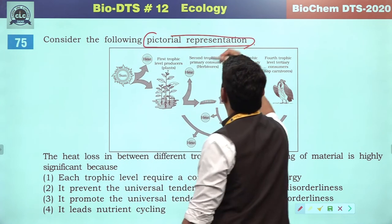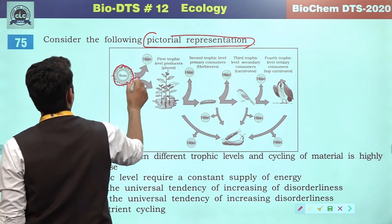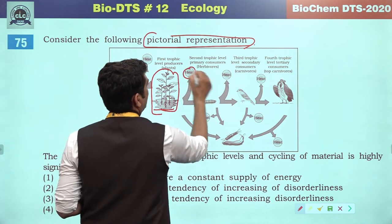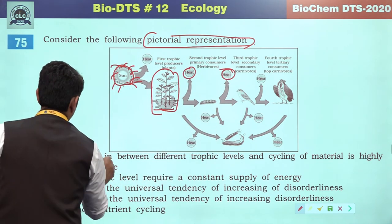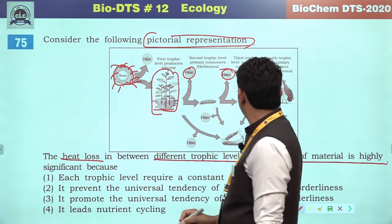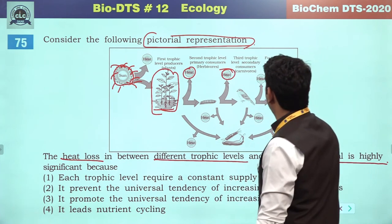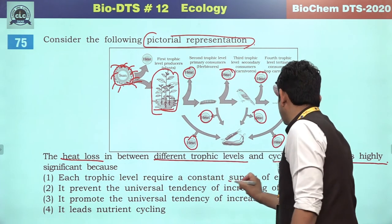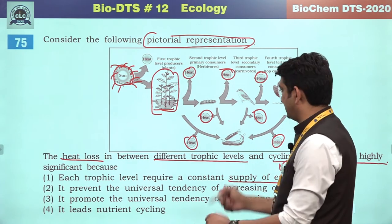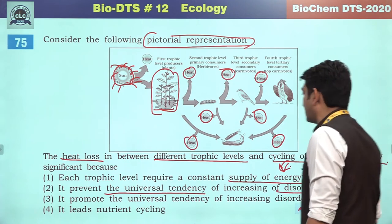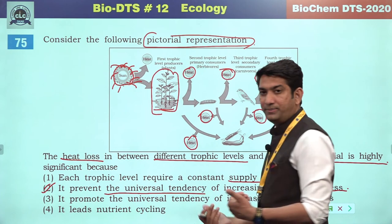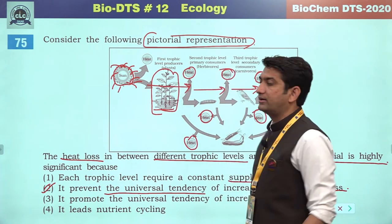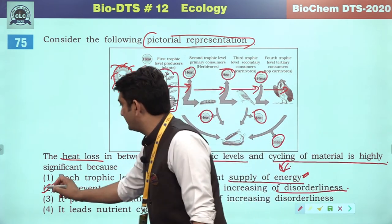Consider the following pictorial representation. The ultimate source of energy is solar radiation. Productivity transfers energy with heat loss between different trophic levels. Cycling of material is also highly significant. Each trophic level requires a constant supply of energy. Heat loss prevents the universal tendency of increasing disorderliness — if energy transfer at each trophic level stayed the same, entropy would increase. So the second will be the correct answer.